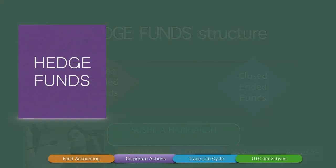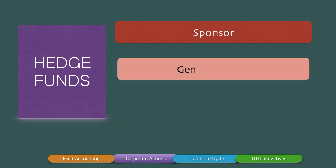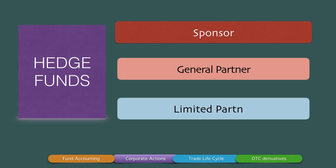Hedge funds are normally driven by the sponsor, the general partner, and the limited partner. In most cases the sponsor and the general partner are similar kinds of entities — the sponsor could be the general partner as well. The limited partner is a partner who just brings in capital contribution to the hedge fund. The general partner and the sponsor come together, set up the asset management company, run the operations, take investing decisions, and do the equity research, fixed income research, currency research, and asset allocation.